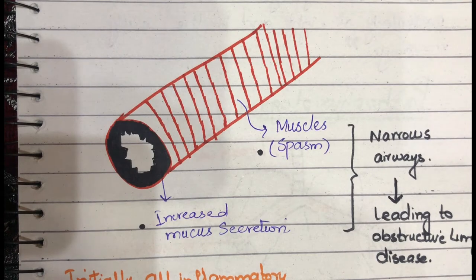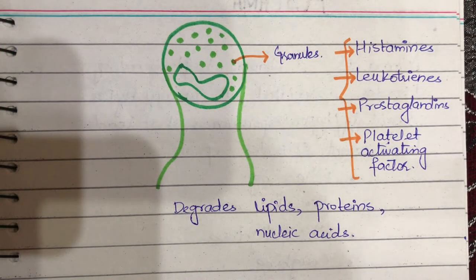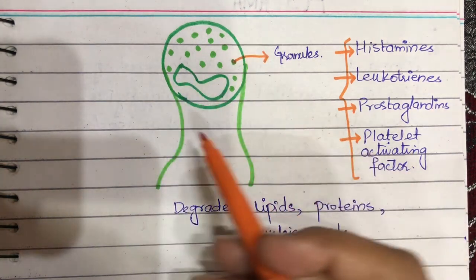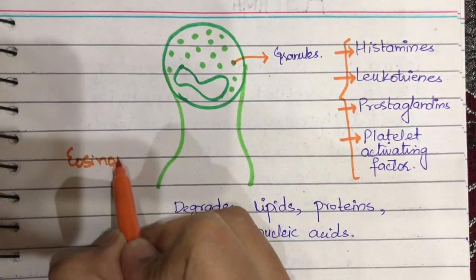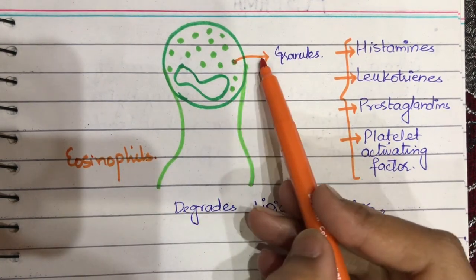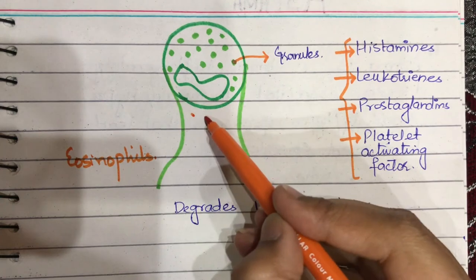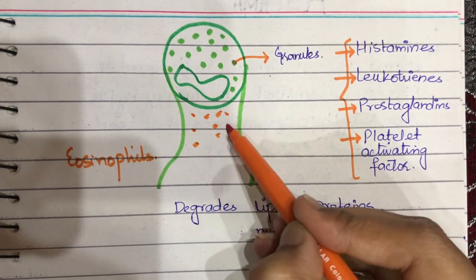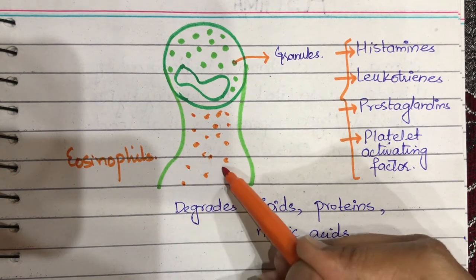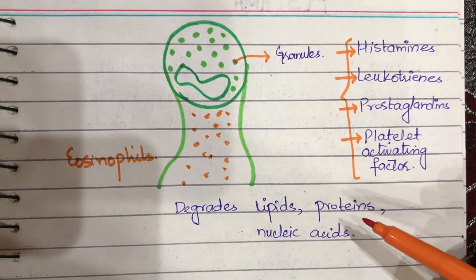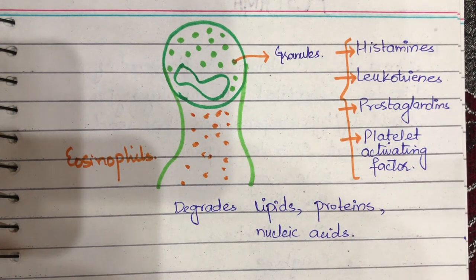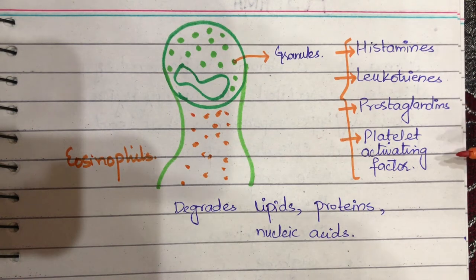In the asthma patient, there is significant eosinophilic accumulation inside the bronchioles. Looking at the structure of eosinophils, they contain different granules. When these granules rupture — when eosinophils rupture — they release granules into the circulation. In the circulation, these degrade proteins, lipids, and nucleic acids. These granules contain histamines, leukotrienes, prostaglandins, and platelet-activating factors.